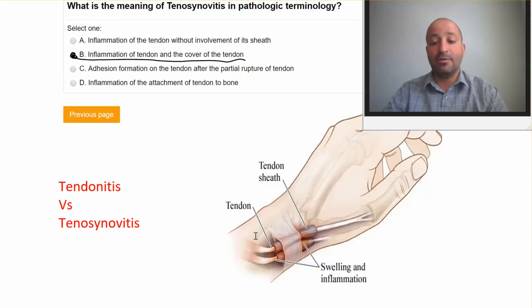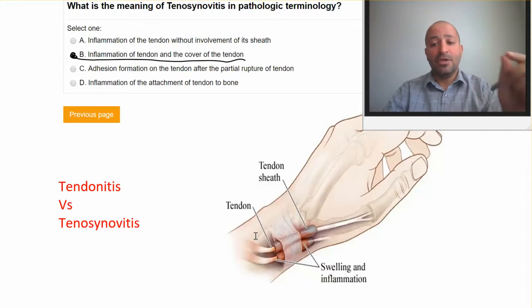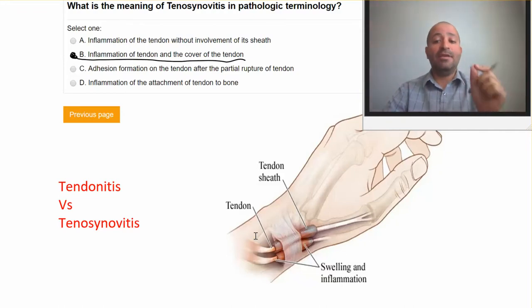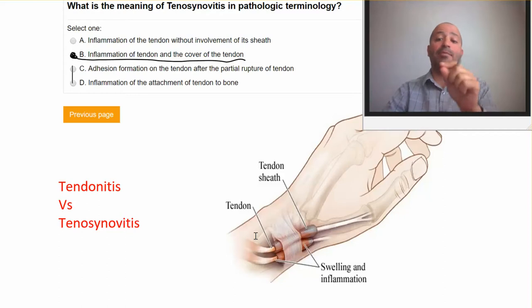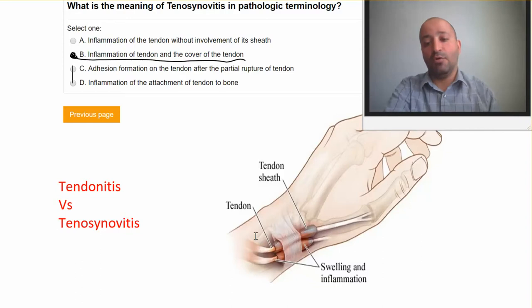In the wrist area, for example, in this case, we call it tendonitis. Tendonitis can happen due to the overuse of the muscle. It can happen right at the attachment to the bone, or it can happen a little bit further between the muscle and the final attachment to the bone.